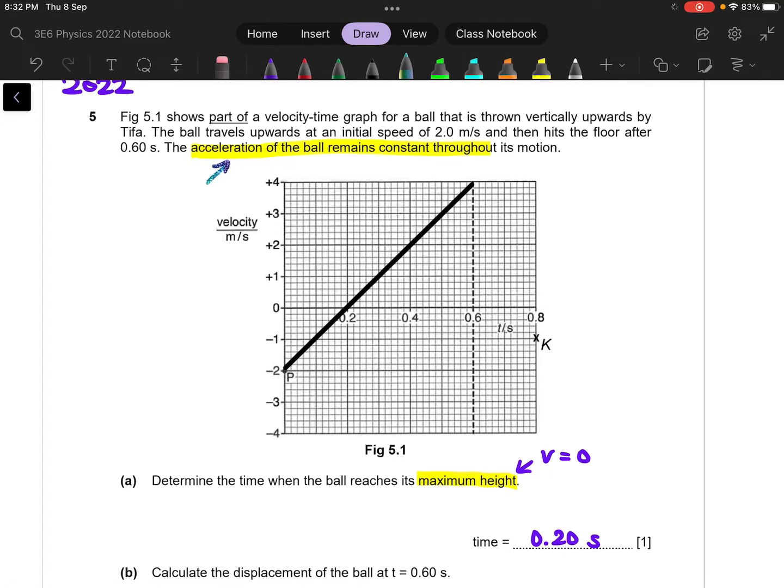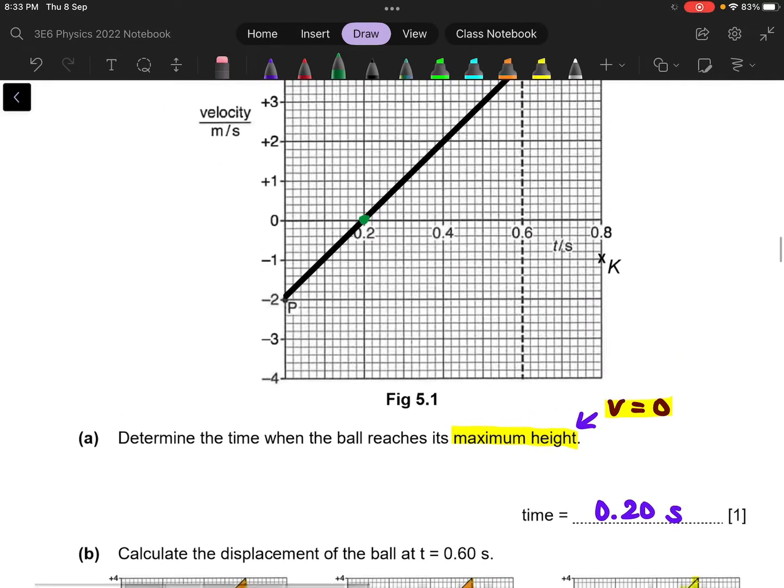Down here, in part A, you are asked when we reach the maximum height. So if you didn't prepare well, intuition may lead you to conclude that this is the highest point, and so the maximum height is here. So you can't do that. In kinematics, we learn that for one-dimensional motion, if the object reaches maximum height, the velocity will be at an instance equal to 0. And this particular instance, you can find it over here at the green dot. So because of that, the timing will be 0.20 seconds in 2SF.